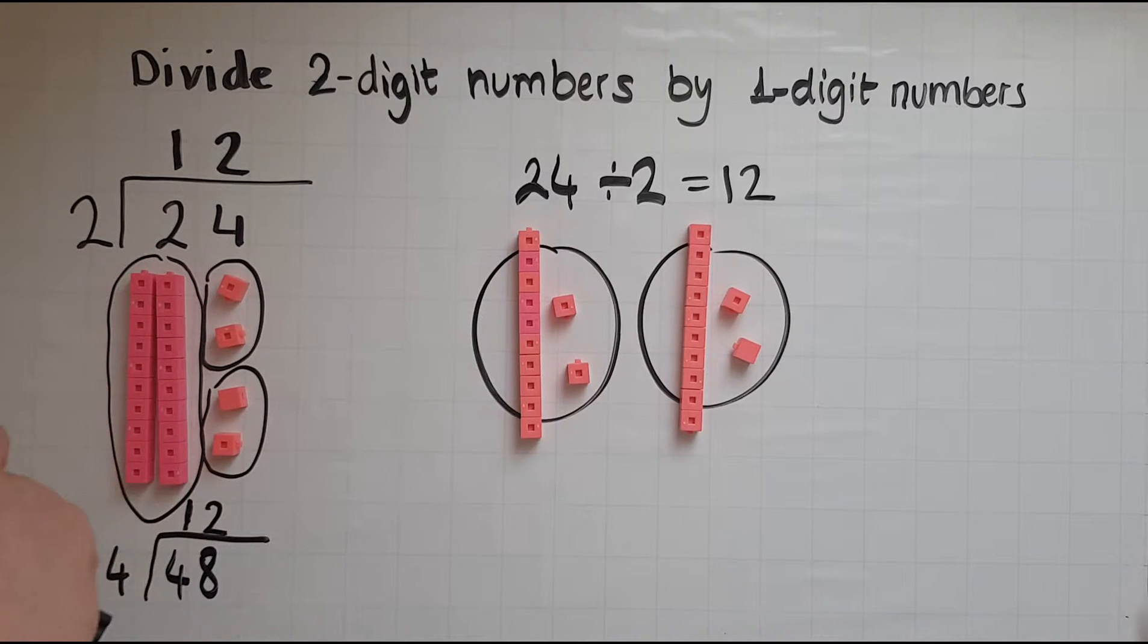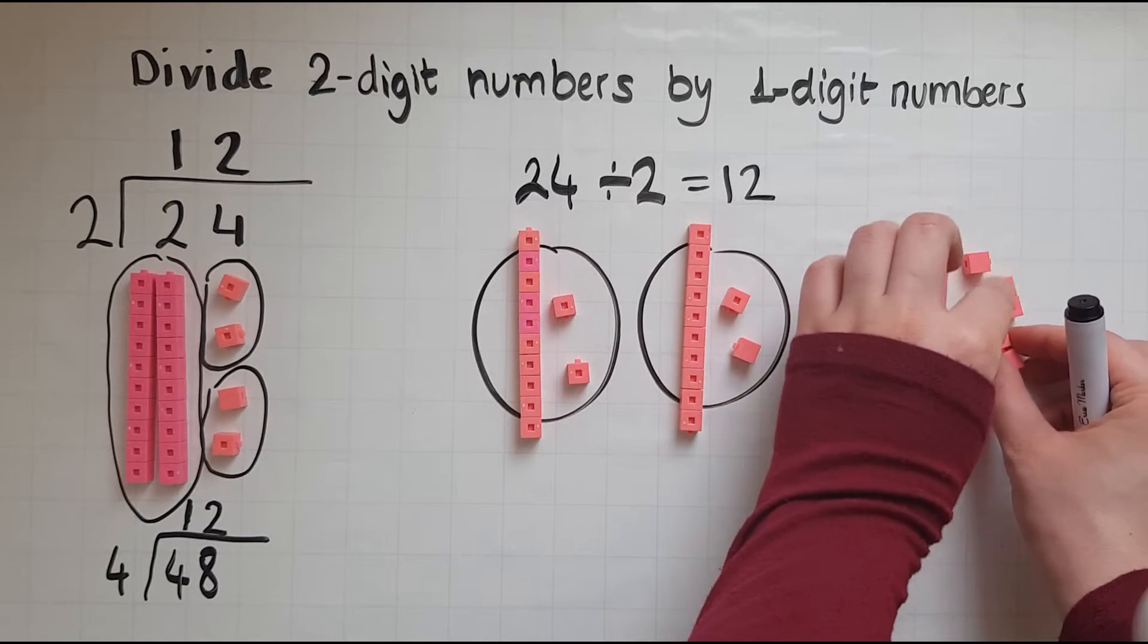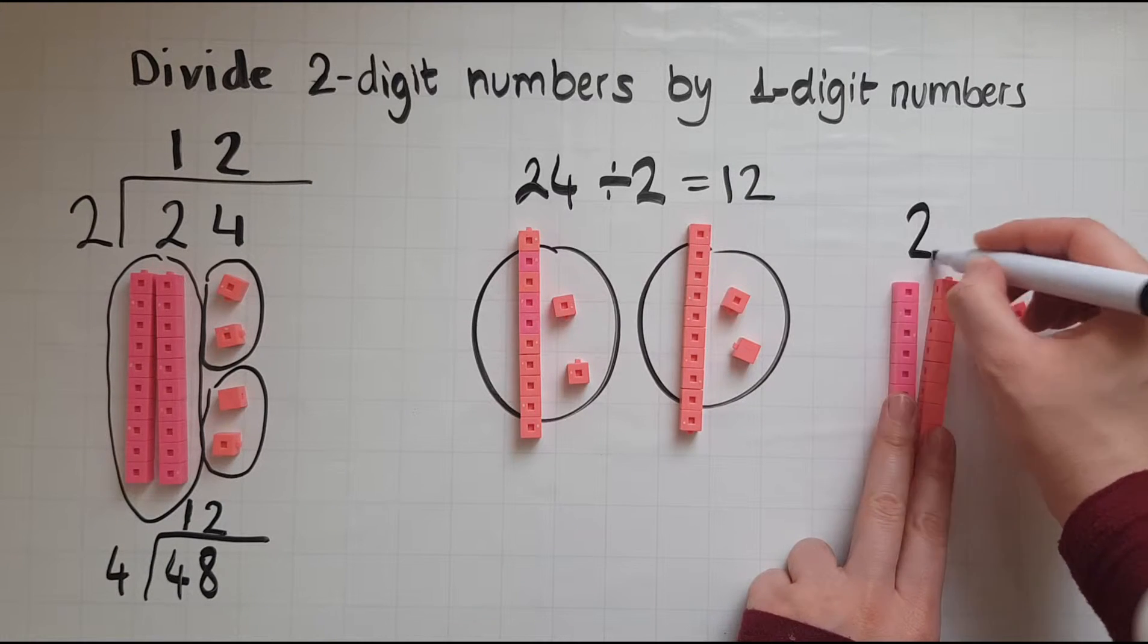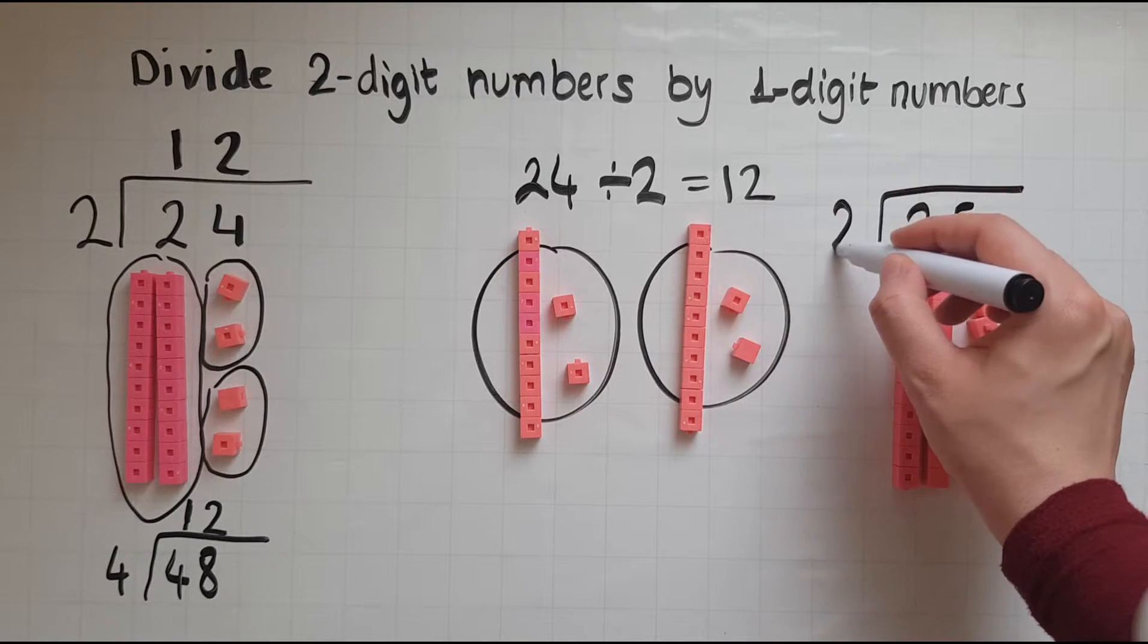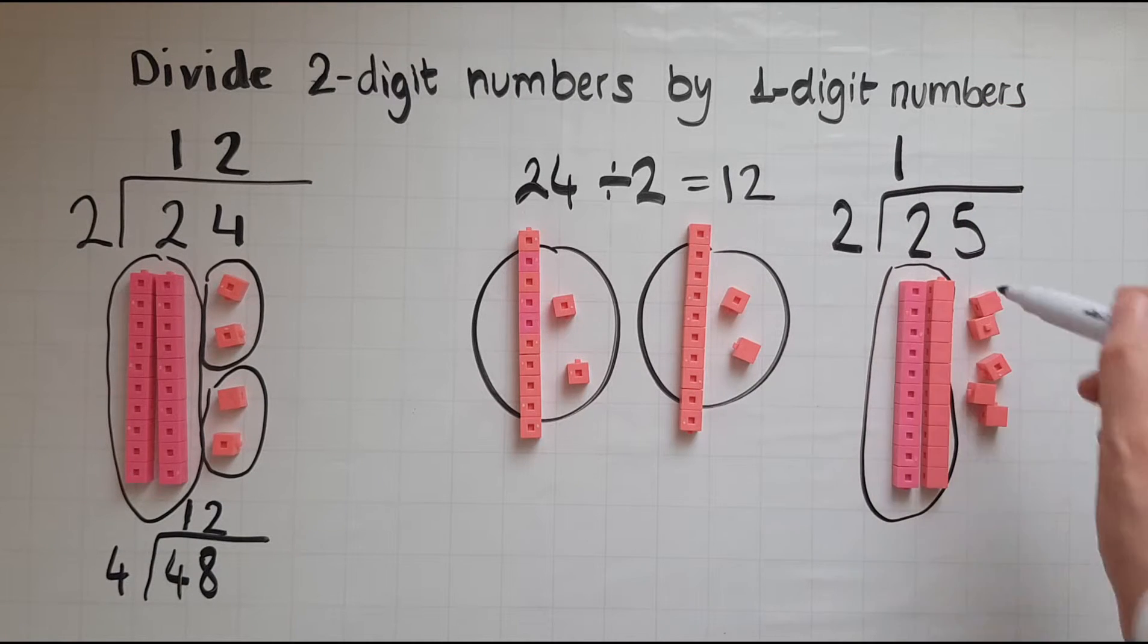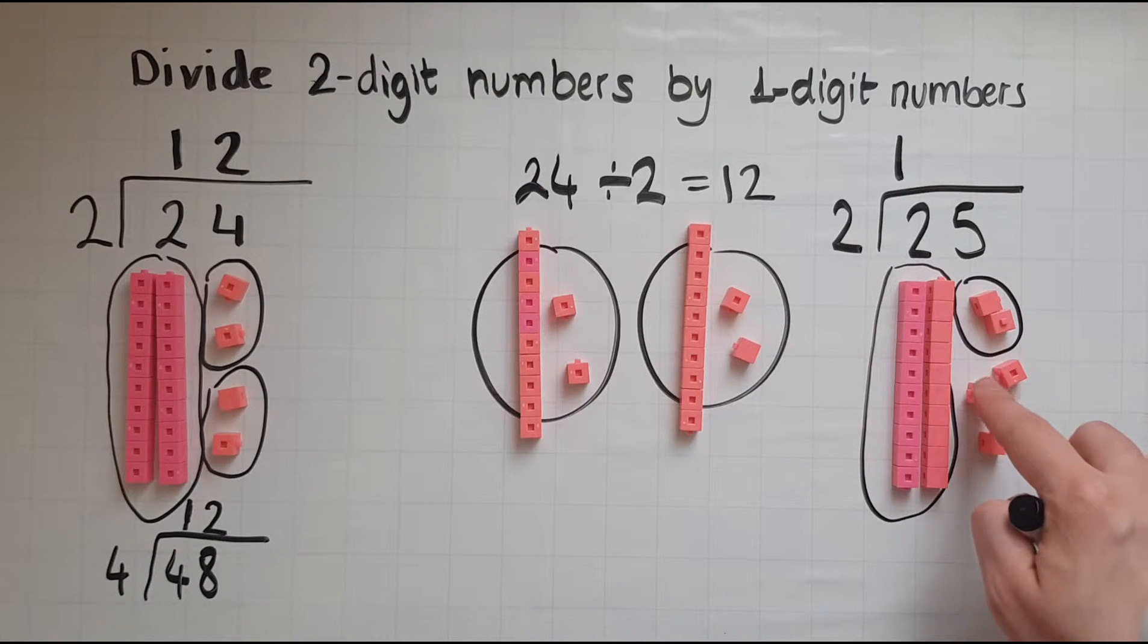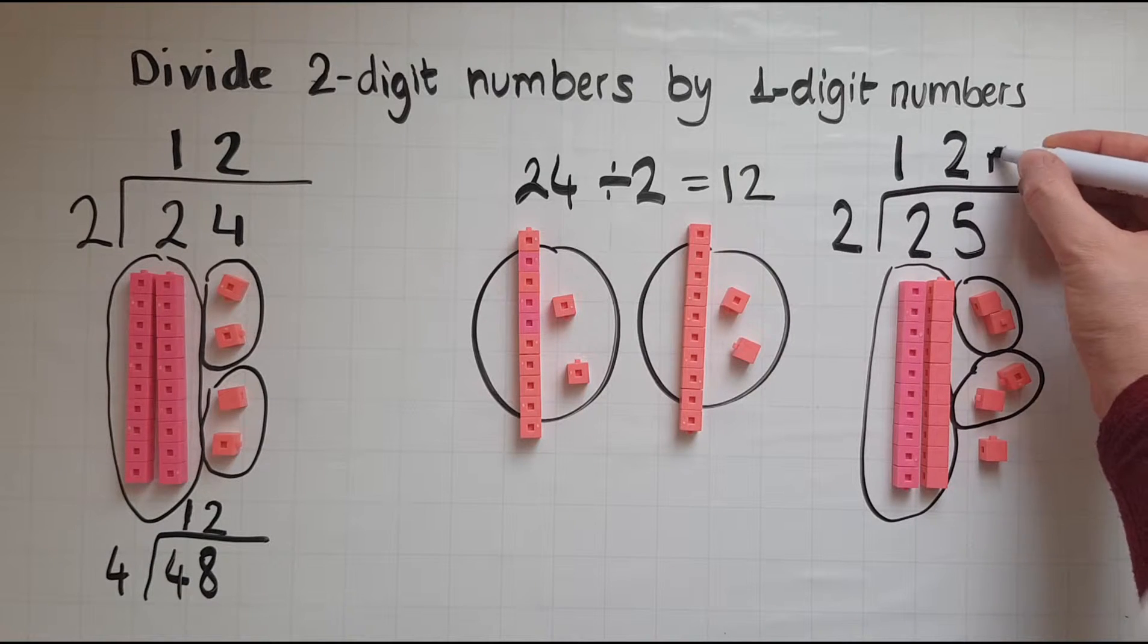So now, instead of 24, I'll get 25. I've got 25 divided by 2. So how many sets of 2 can I make with these 2? There's just 1, and there is nothing remaining. Now how many sets of 2 can I make with 5? I can make 1 here and another 1 here. So I've got 2 sets, and there is 1 remaining.